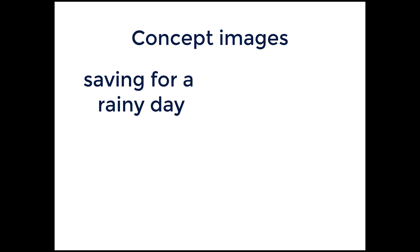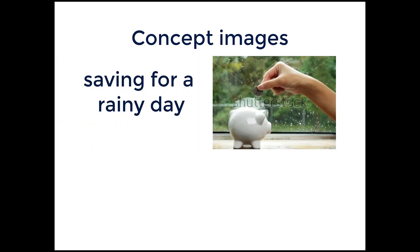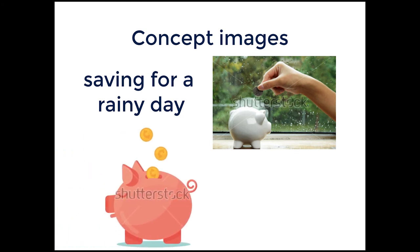Another concept image is saving for a rainy day. You can build images around a lot of phrases like this. This one is very literal — the photographer chose a rainy day and then showed saving money on that day. But you don't have to be that literal; you can just draw a picture of saving money and then put 'saving for a rainy day' in your keywords. That way, anytime someone's searching for that phrase, they will see your image.